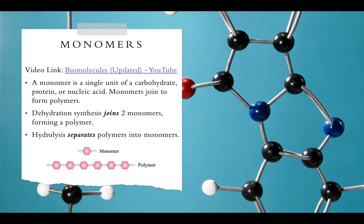Looking at these diagrams, a monomer is a single unit and a polymer is multiple monomers chained together. Monosaccharides are monomers, disaccharides are two joined monomer units — 'di' meaning two — and polysaccharides are long chains, like starch — 'poly' meaning multiple. So mono means one, di means two, and poly means multiple.